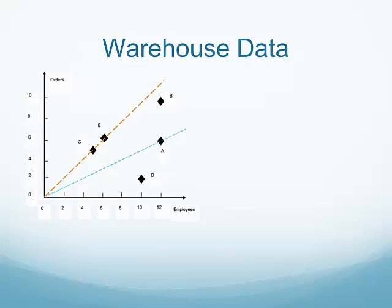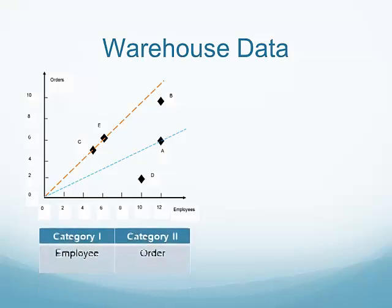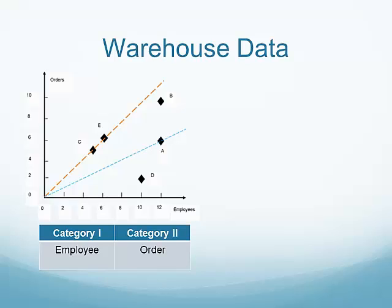We use two measures: one is the number of employees, the other is the number of orders processed. In this particular case, we want to minimize the number of employees and maximize the number of orders processed.